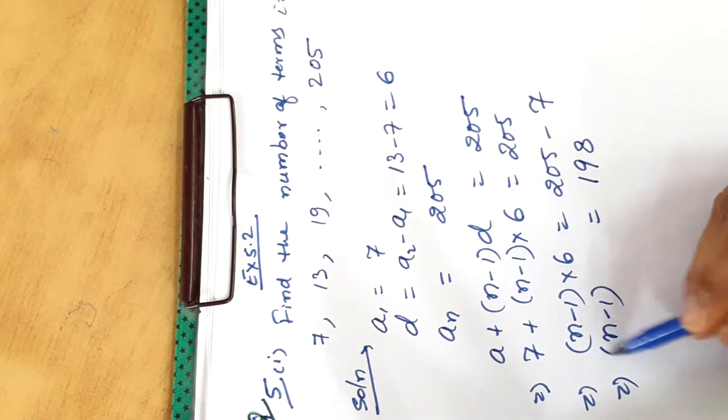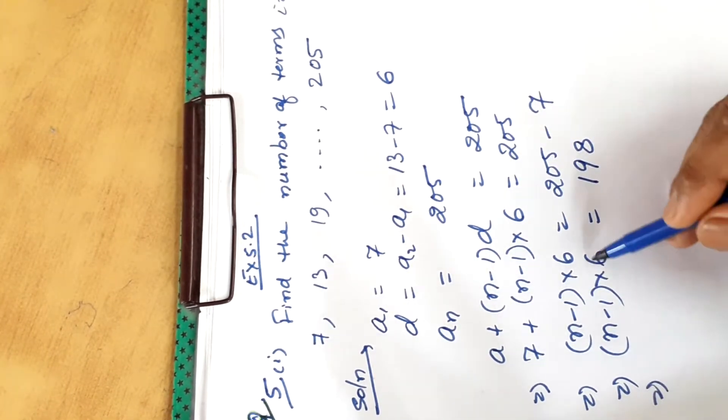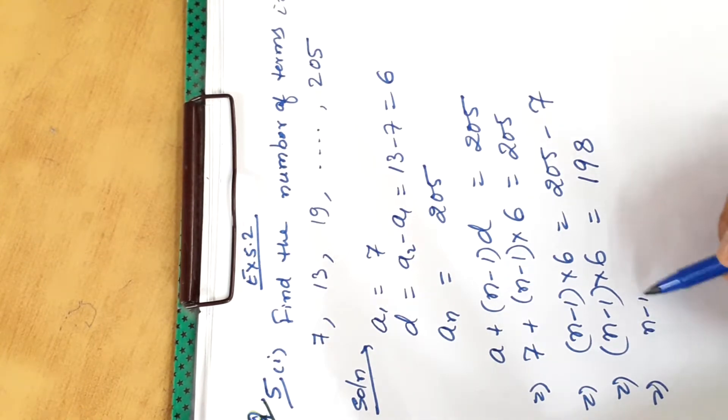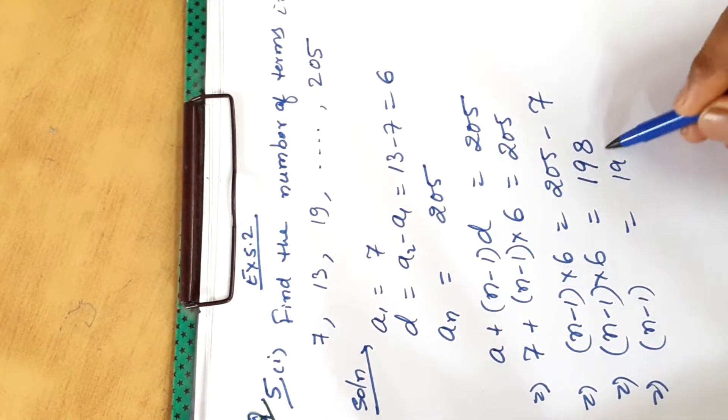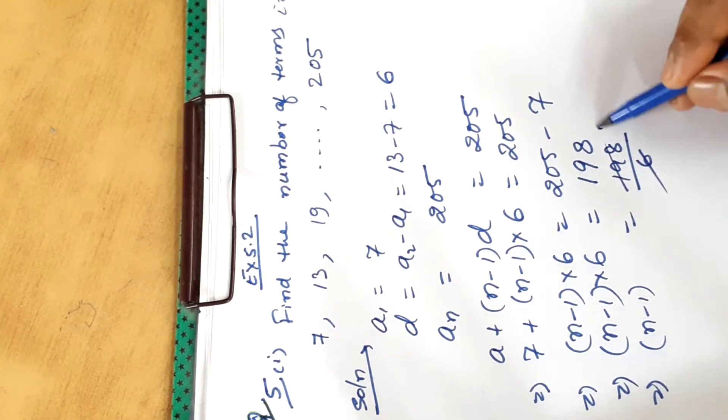This is N minus 1 into 6. Now we will transfer 6 to this side. This is equal to 198 upon 6. 33 we get.